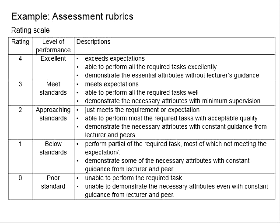There is one more thing: it is possible for you to score no marks for certain criteria. This happens when you are unable to perform the required tasks, or those tasks are not performed, and even with constant guidance from lecturers or peers, you still cannot produce it. Most students will fall between ratings two and three. Those meeting the standard will get three, and those slightly below will get two. Unless there are significant shortcomings, a rating of one is also possible. Therefore, you need to do your assignment properly.